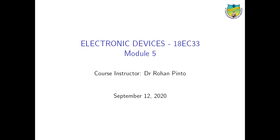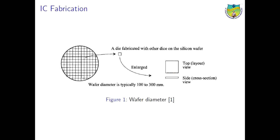Welcome to the course on electronic devices, module 5. We will be studying about fabrication in this particular lecture. The process of fabrication for all devices such as diodes, BJTs, and FETs are all similar with slight modification in the process. All integrated circuits are nowadays built using FETs.